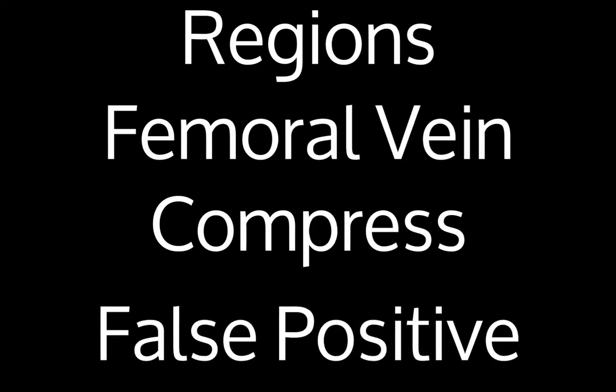To recap, there are two regions you need to look at: the popliteal region and the femoral region. In the femoral region, it's very important to go down at least to about mid thigh, because if you don't include the femoral vein in your evaluation, you might miss a clinically significant amount of DVTs and potentially harm your patients. So don't forget to compress — make sure that about every centimeter or so that vein is completely compressible. And be careful of those false positives.